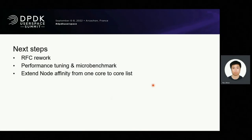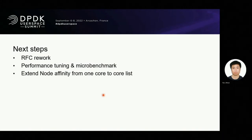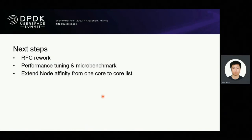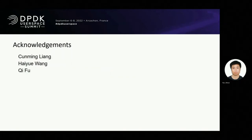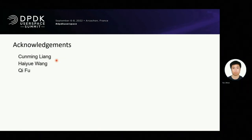Here is our current work and the next steps. You could find our RFC patch in the community — comments and suggestions are welcome. For the next step, we will do performance tuning and micro benchmarks. We will extend the node affinity from one core to core list, so the core can be scaled. This is a joint effort; thanks to these colleagues. Thank you very much, that's all for our session.